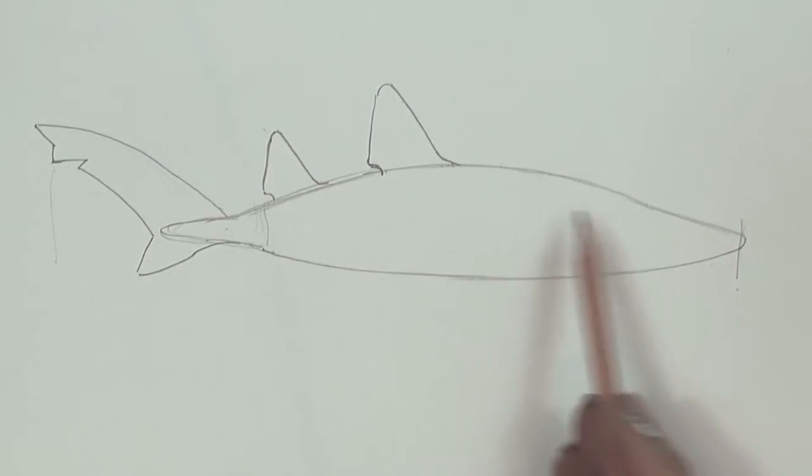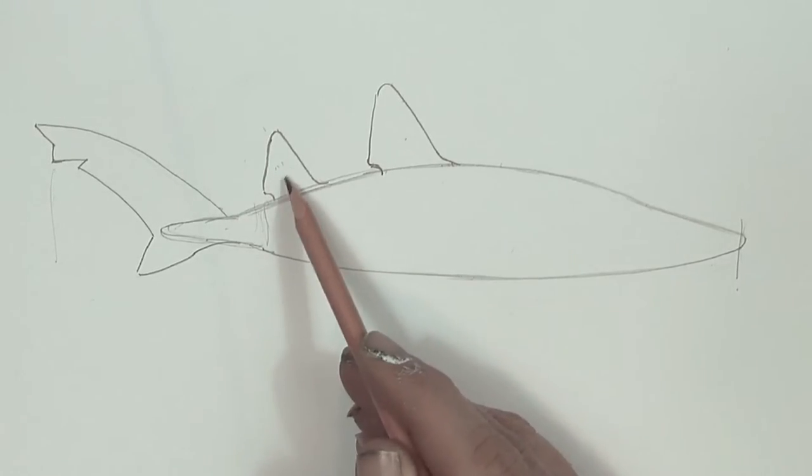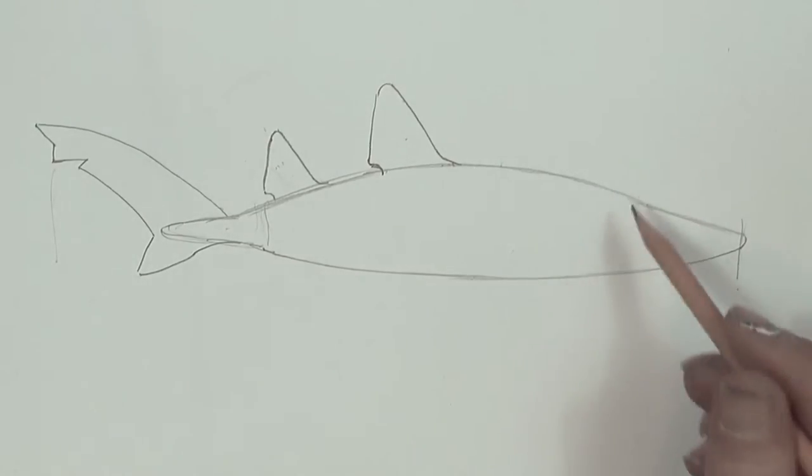So that's one of the unusual features of these sharks, is that this fin is almost the same size as that fin, whereas normally a shark would be much smaller, so it's one of the features of this particular shark.